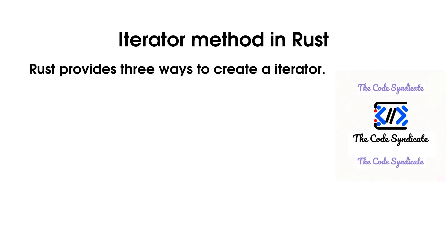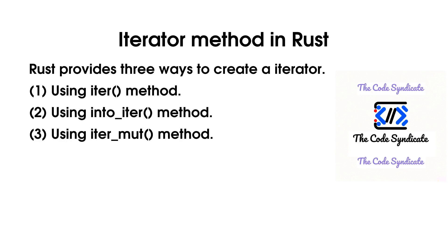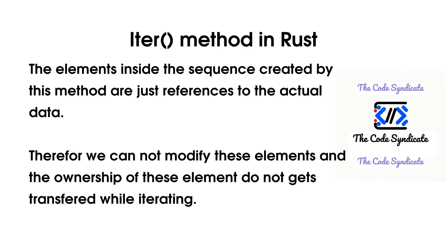Rust provides three ways to create an iterator: number one, using the iter() method; number two, using the into_iter() method; and number three, using the iter_mut() method. The iter() method creates a sequence where elements are just references to the actual data, so we cannot modify these elements and ownership is not transferred while iterating.